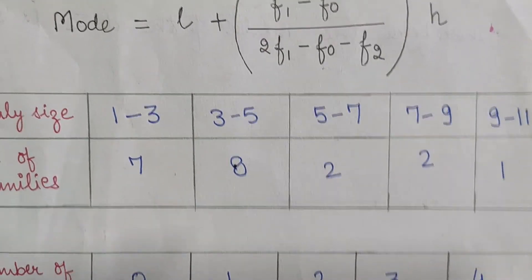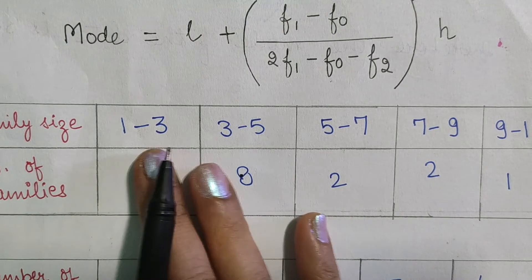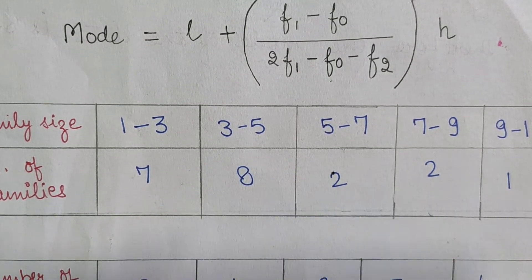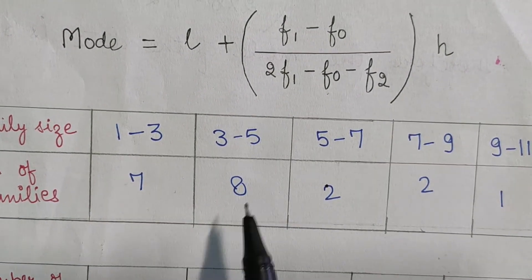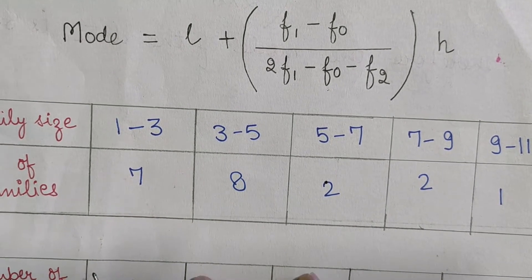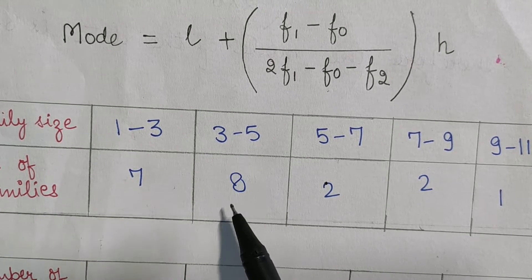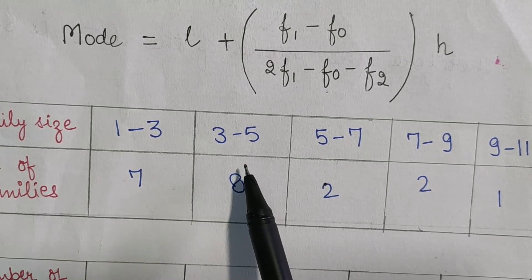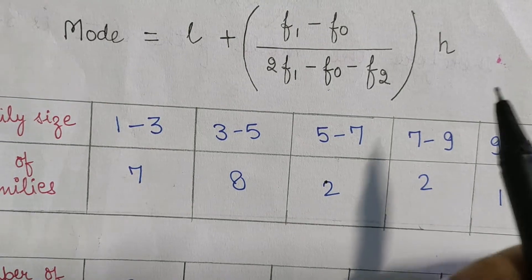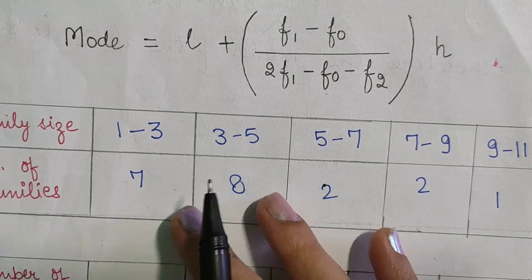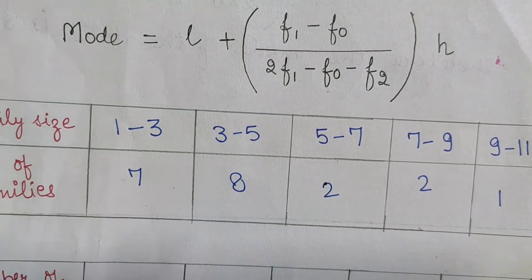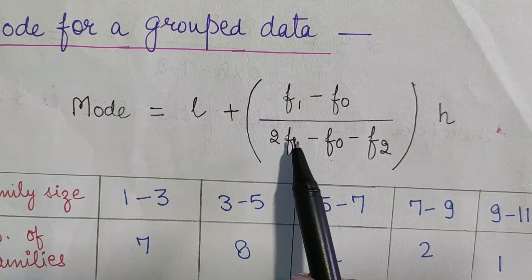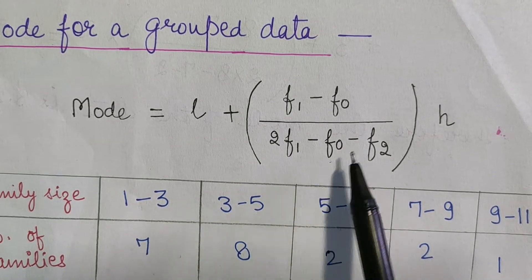In the case of grouped data, where we show classes, it is difficult to get the exact mode. We can identify the modal class — the class with the maximum frequency. For example, the interval three to five has the maximum frequency, so it is called the modal class. To find a particular value, we use the formula: Mode = l + [(f1 − f0) / (2f1 − f0 − f2)] × h.